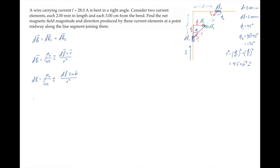Because the field produced by each current element is in the same direction, we can find the net magnitude by just adding the two magnitudes.